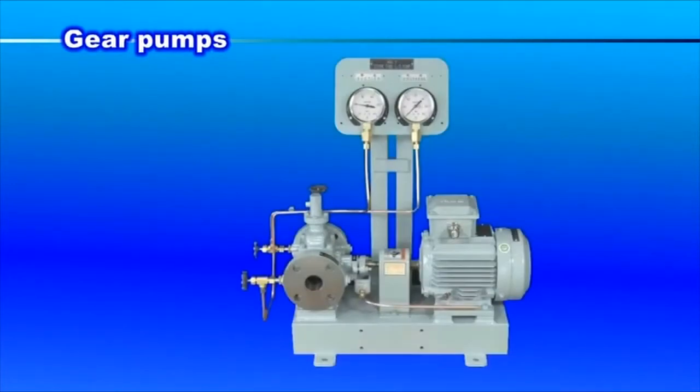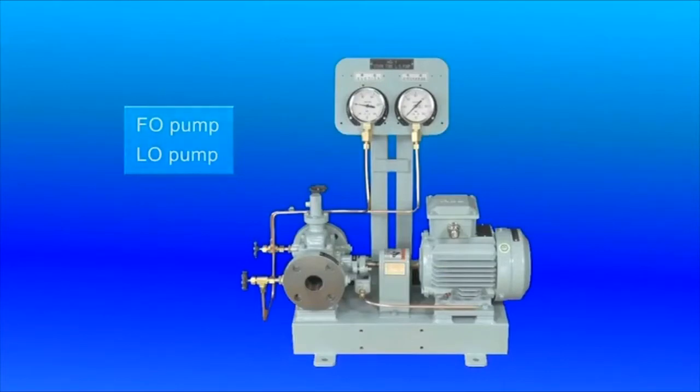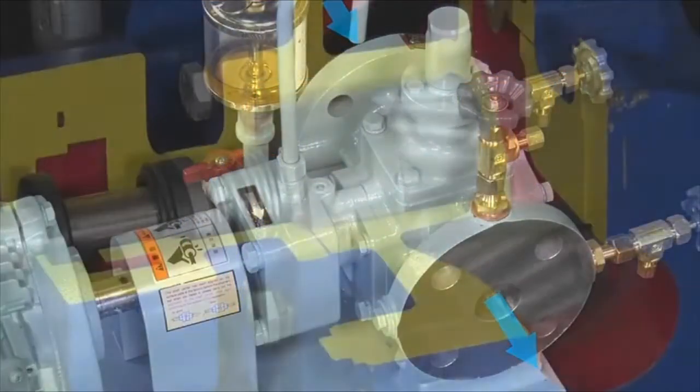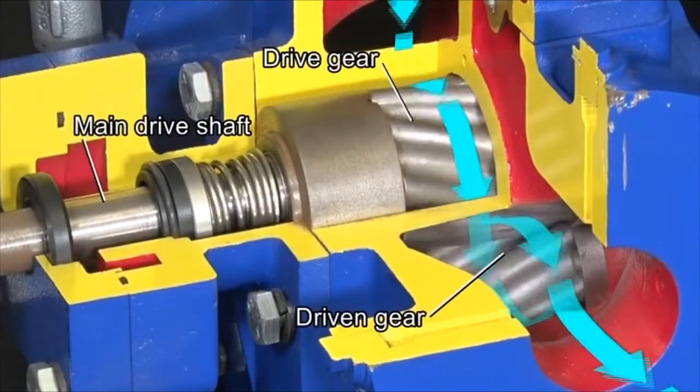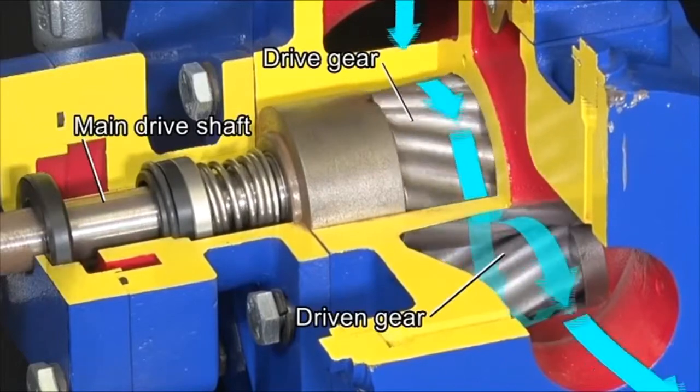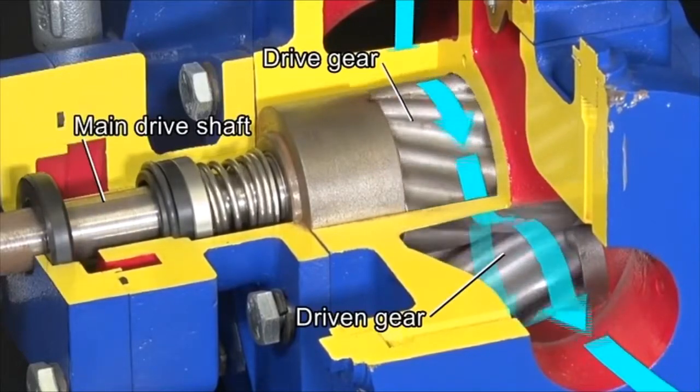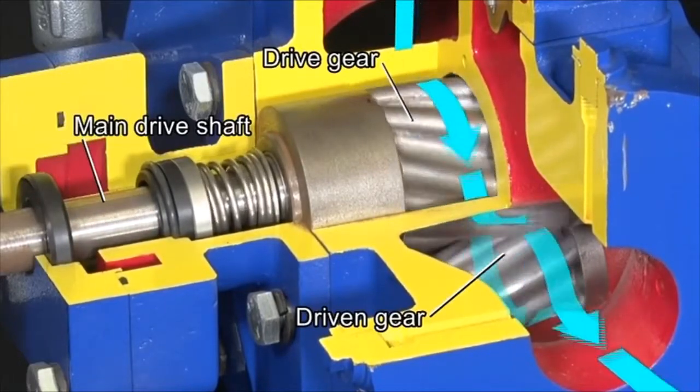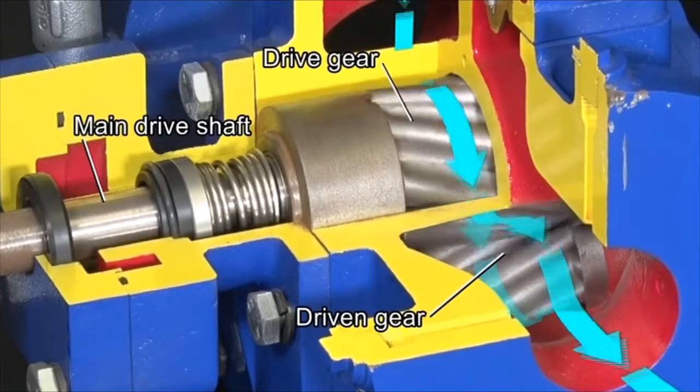Gear pumps are mainly used as fuel oil and lubricating oil pumps. Rotation of the main drive shaft moves a space created between the drive and driven gears, thereby allowing a highly viscous liquid to be carried from the pump inlet to the outlet.